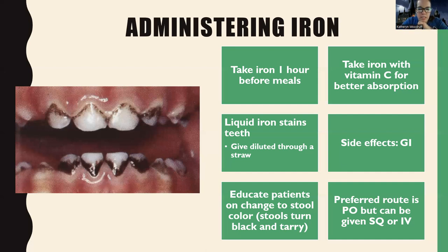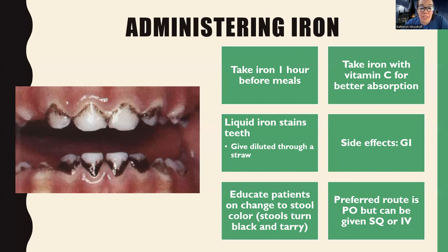You also want to tell patients they might have GI side effects like nausea, and because of the color and composition of iron, it can change their stools to a black or tarry color. Definitely warn patients about that because it can be pretty scary if you start seeing black stool. Iron is preferred to be given orally, but it can be given subcutaneously or IV if needed.